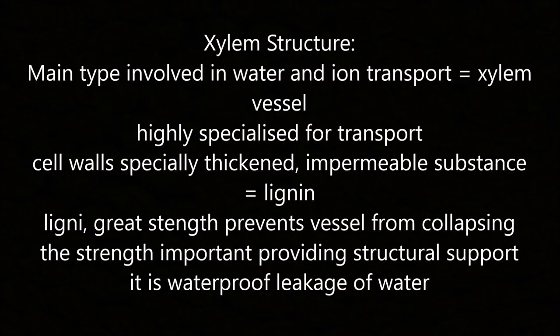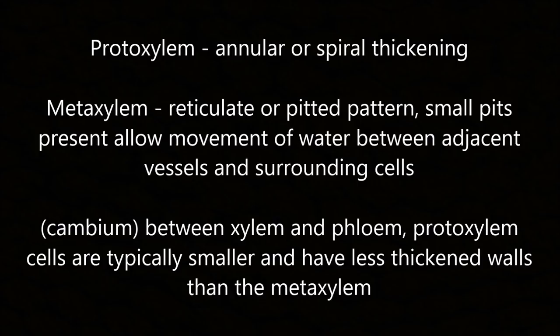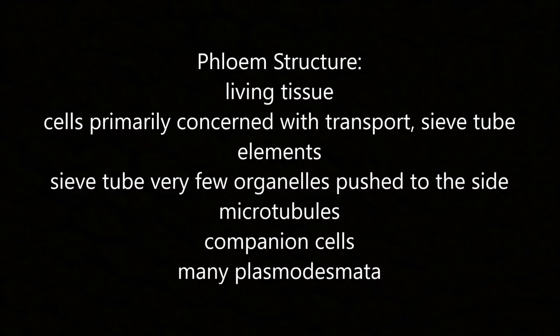Lignin provides great strength preventing the vessel from collapsing, is waterproof, and prevents leakage of water. The proto-xylem has annular or spiral thickening; the meta-xylem has a reticulate or pitted pattern with small pits allowing movement of water between adjacent vessels and surrounding cells. The cambium is the area between xylem and phloem. Proto-xylem cells are typically smaller with less thickened walls than meta-xylem.